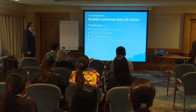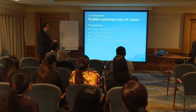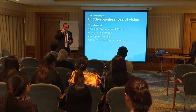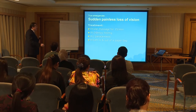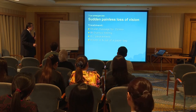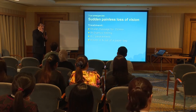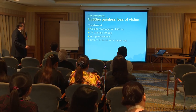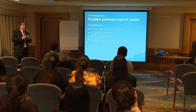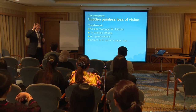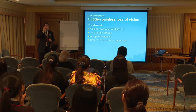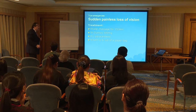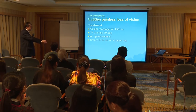Treatment of sudden painless loss of vision includes ocular massage: you press on the patient's eye and remove your hand, press and remove, repeatedly. The second approach is to prepare IV Diamox 500 mg or give the patient a Diamox pill. We can also do anterior chamber paracentesis — using a fine needle and syringe, go from the edge of the eye into the anterior chamber and take some of the aqueous. This anterior chamber paracentesis is very effective.